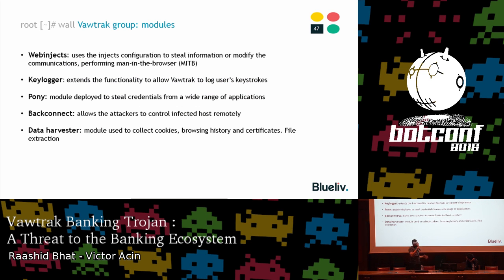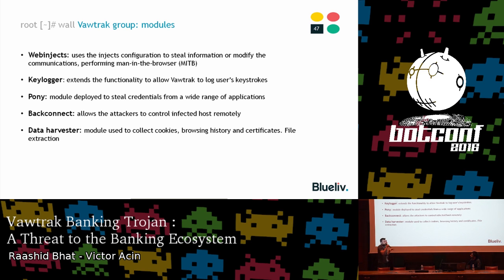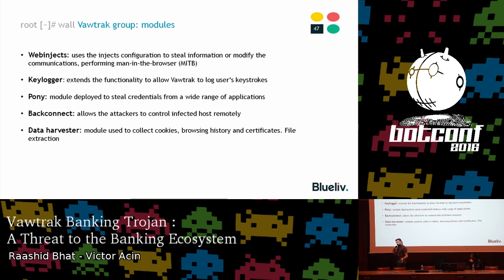The modules are the webinject module, a keylogger, a backconnect module, and a data harvester module that collects cookies, browsing history, and certificates. The interesting part is the Pony module: an infected machine ends up with two Ponies inside — one deployed by Moscow Zappo, and another dropped by Vawtrak. So credentials from that machine are stolen twice and sent to two different endpoints.